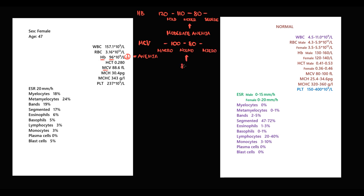In this case, MCV is 88.6, so it is normal size — thereby it is moderate normocytic anemia. Usually when hemoglobin is low, red blood cells are also low, and here red blood cells are 3.16, which is lower than normal. The next value is platelets: 237, which is normal.